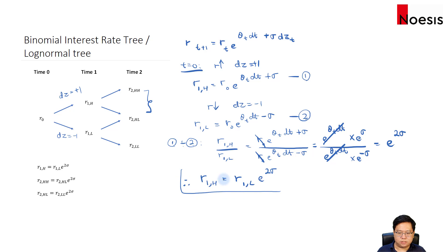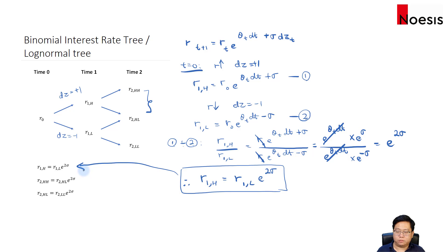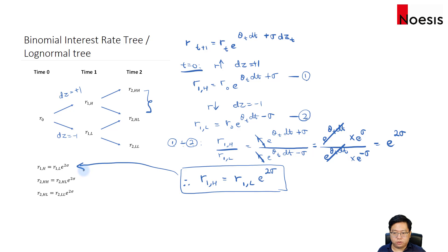That's the relationship between the lower and upper node of the binomial interest rate tree, and the same approach can establish the relationship between lower and upper nodes for time 2, time 3, and so on.